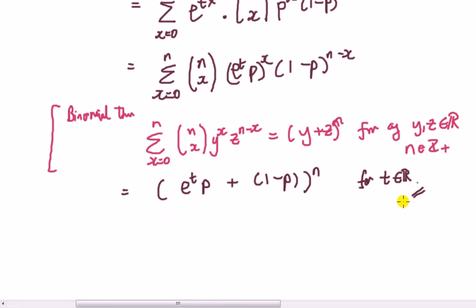And we don't have any fractions here, so this function is for any t on the real line. Done, that's method one. Method one relied on us being able to know this result here, the binomial series or binomial theorem, one form of it. Okay, let's do method two.